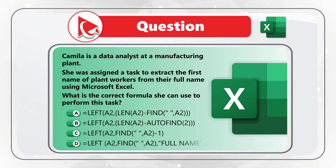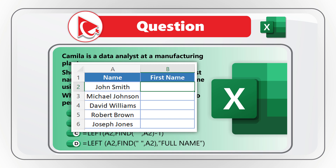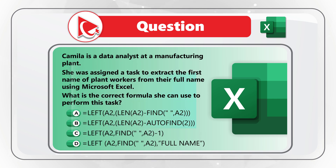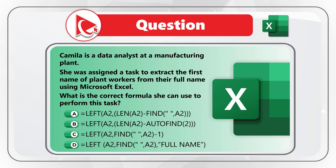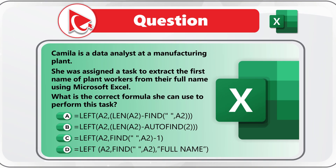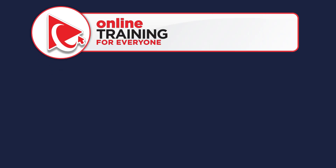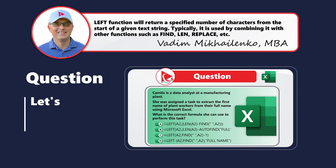Choices A, B, C, and D, as well as a snippet of data, where column A contains the full name of the workers and column B has the empty first name column. Do you know which one is the right formula to extract the first name? Take a close look — maybe pause this video to see if you can come up with the answer.